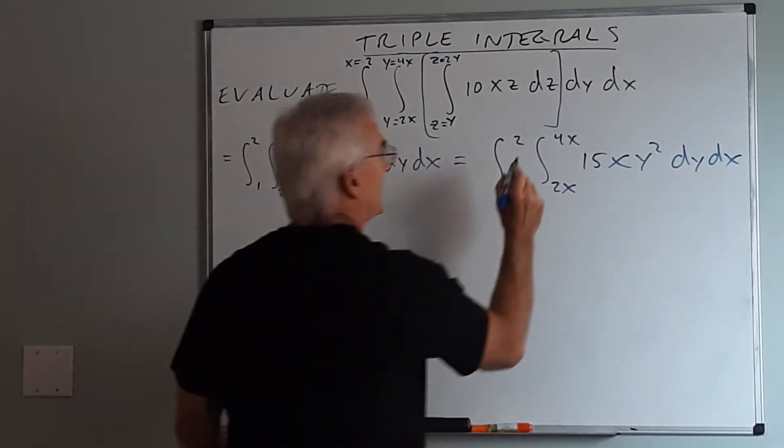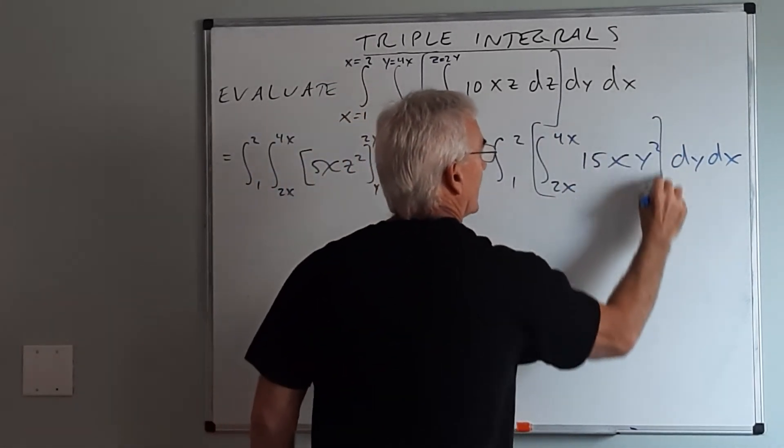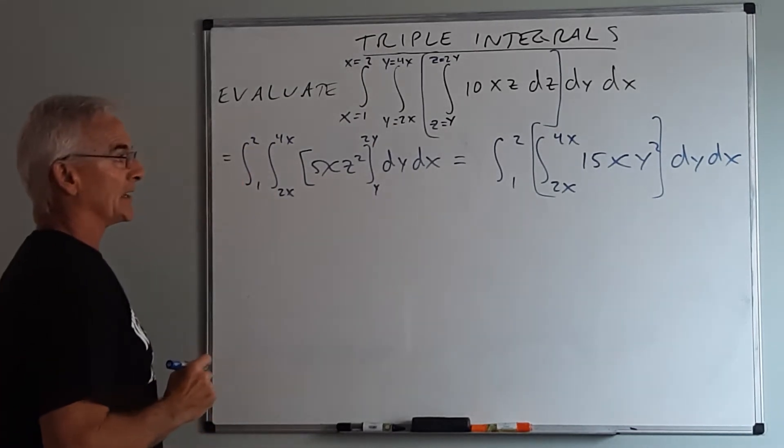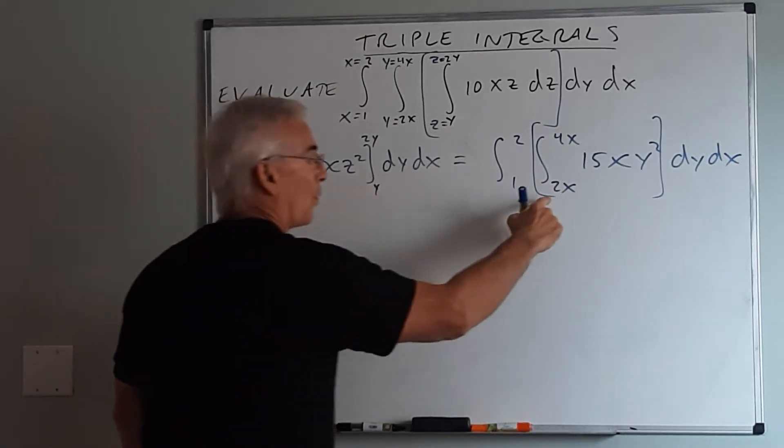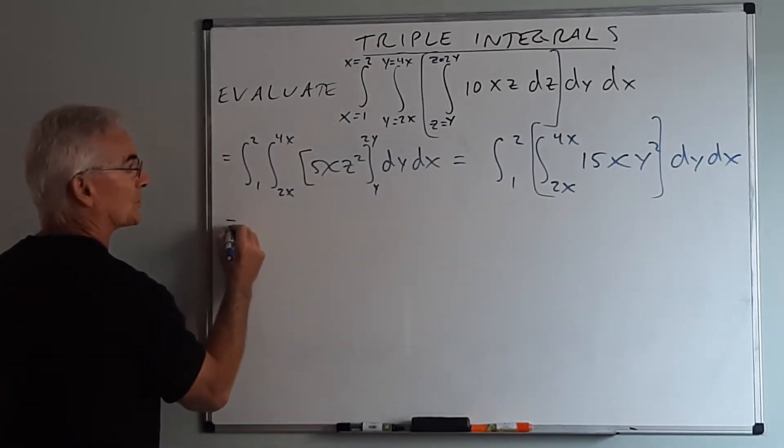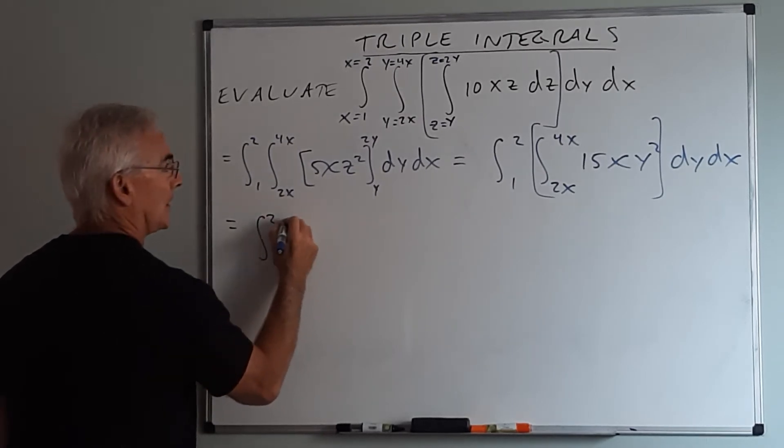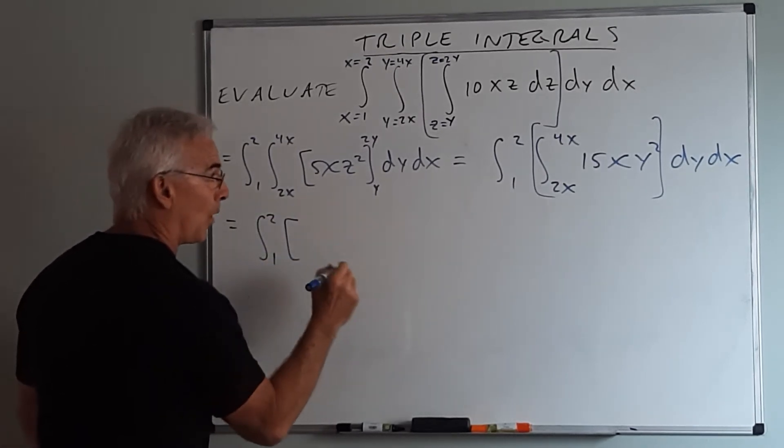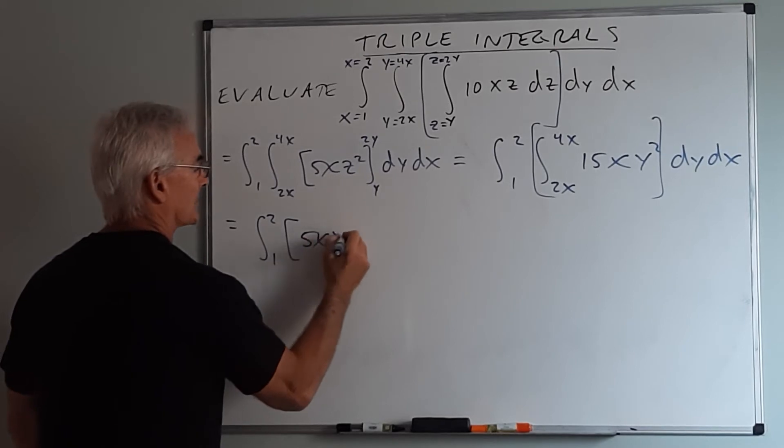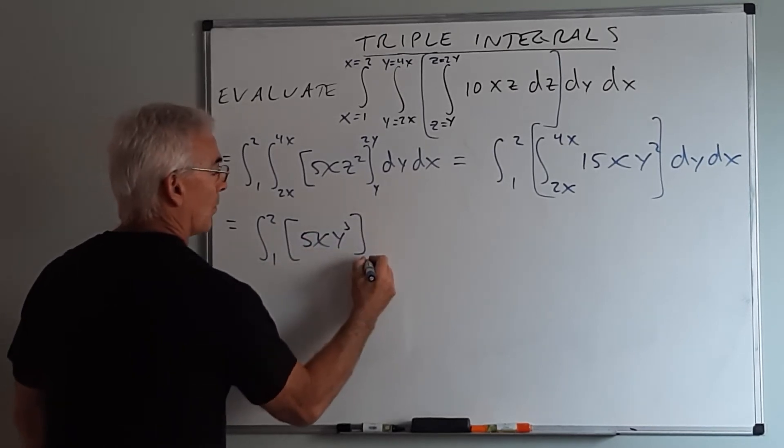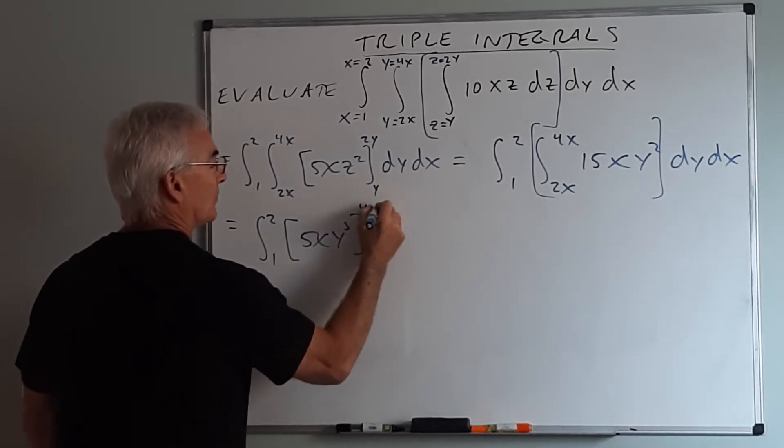Now I do the same thing. I go inside out and now I evaluate that integral. These are the y limits remember, so this will become 1 to 2. I'm integrating with respect to y, so this would be 5xy cubed, from y equal 2x to y equal 4x dx.